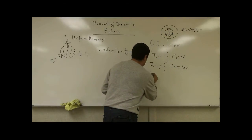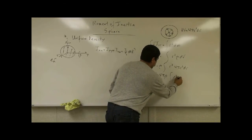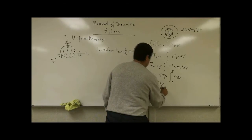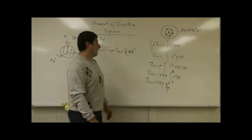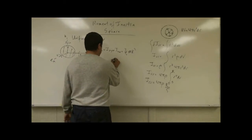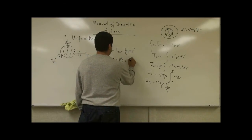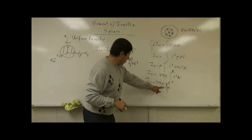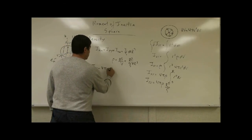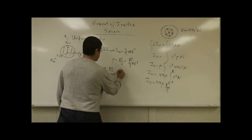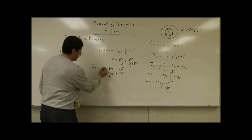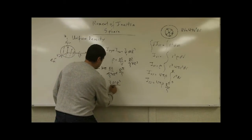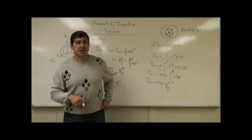This gives I_RR = 4π ρ ∫r⁴ dr, integrated from 0 to R. The integral evaluates to r⁵/5. We substitute the volume density ρ = M / (4/3 π R³). Substituting in, I_RR = 4π × (M / (4/3 π R³)) × R⁵/5. The 4π cancels and the 3 moves to the numerator, giving I_RR = 3/5 m r squared.